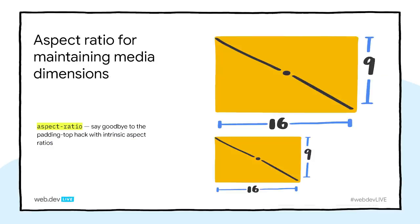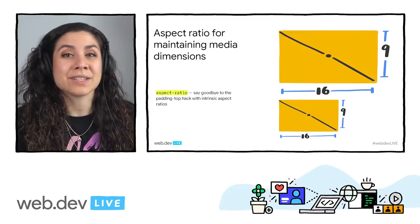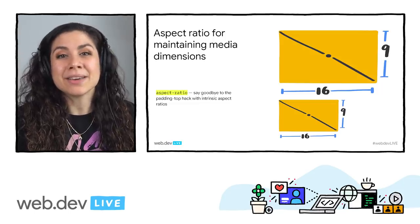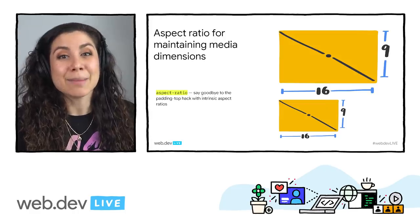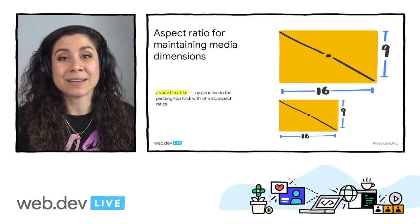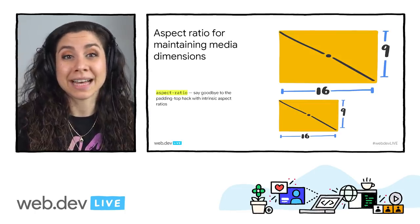There are also some CSS properties coming down the pipeline that will help with user needs not yet met. Aspect-ratio is one of them — this just landed in Chrome Canary, and it enables users to set defined width-to-height ratios for media items like images and video. Previously the way to do this was a hack using padding and calculating a percentage, but now you can set your ratios in a much more readable way.